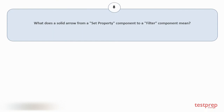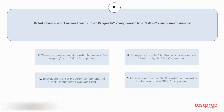Question number eight: What does a solid arrow from a Set Property component to a Filter component indicate? Your options are: A) there is a one-to-one relationship between a Set Property and a Filter component; B) a property from the Set Property component is referenced by the Filter component; C) to evaluate the Set Property component, the Filter component is evaluated first; D) information from the Set Property component is copied over to the Filter component. The correct answer is option B.